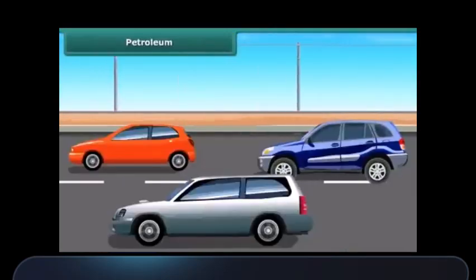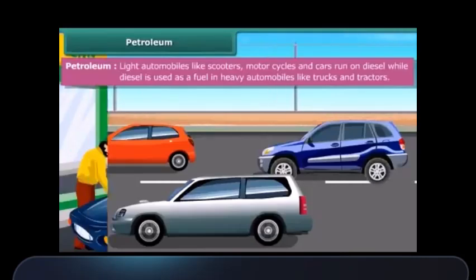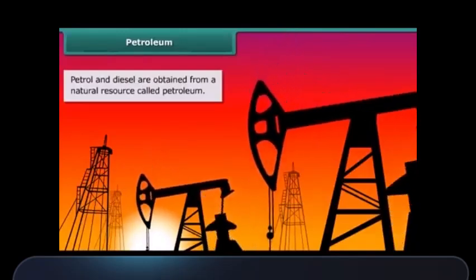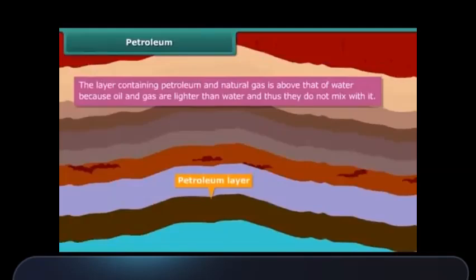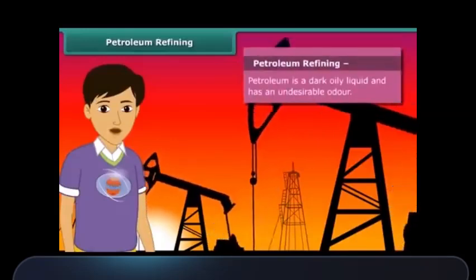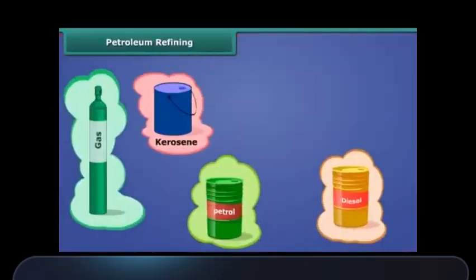Most luxury cars and vehicles run on either petrol, diesel, or compressed natural gas, also known as CNG. Petrol and diesel are obtained from a natural resource called petroleum. Petroleum and natural gas deposits exist as a layer above the water layer underground.